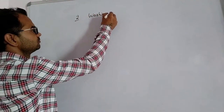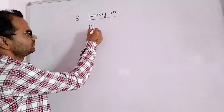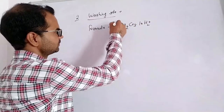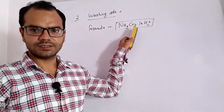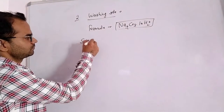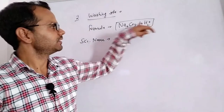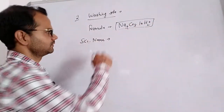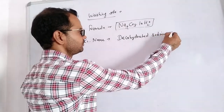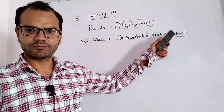Second, we have washing soda. It is sodium carbonate with 10 water molecules — Na₂CO₃·10H₂O. Its scientific name is decahydrated sodium carbonate.